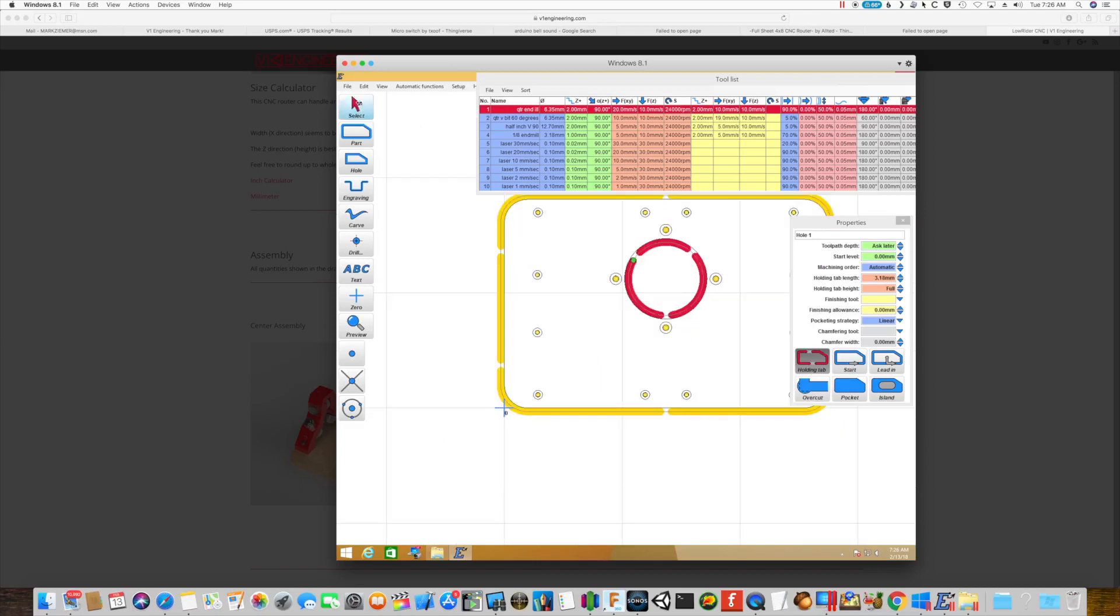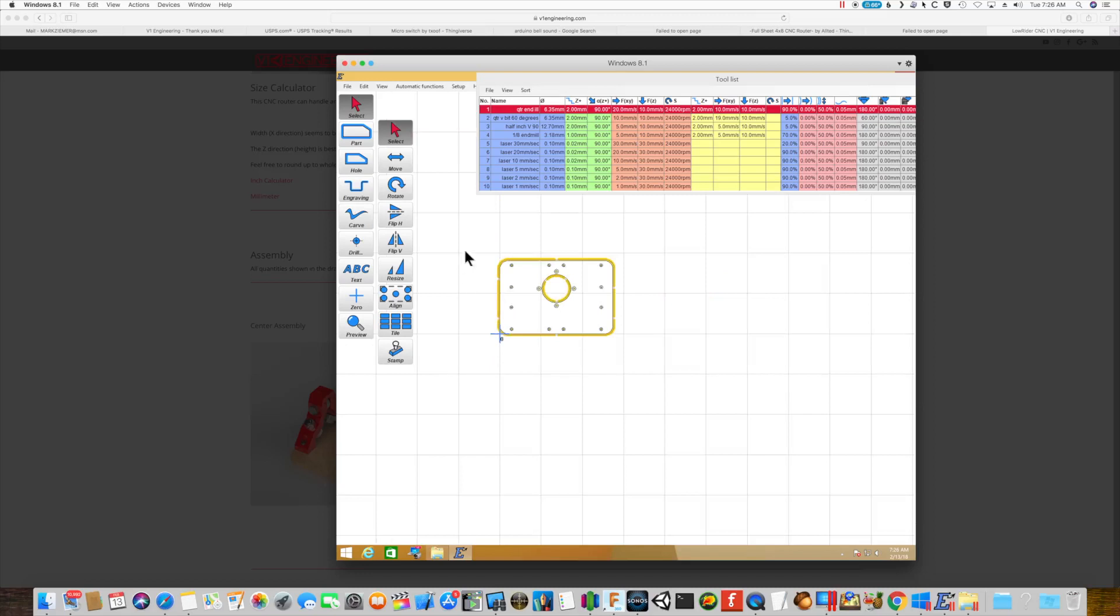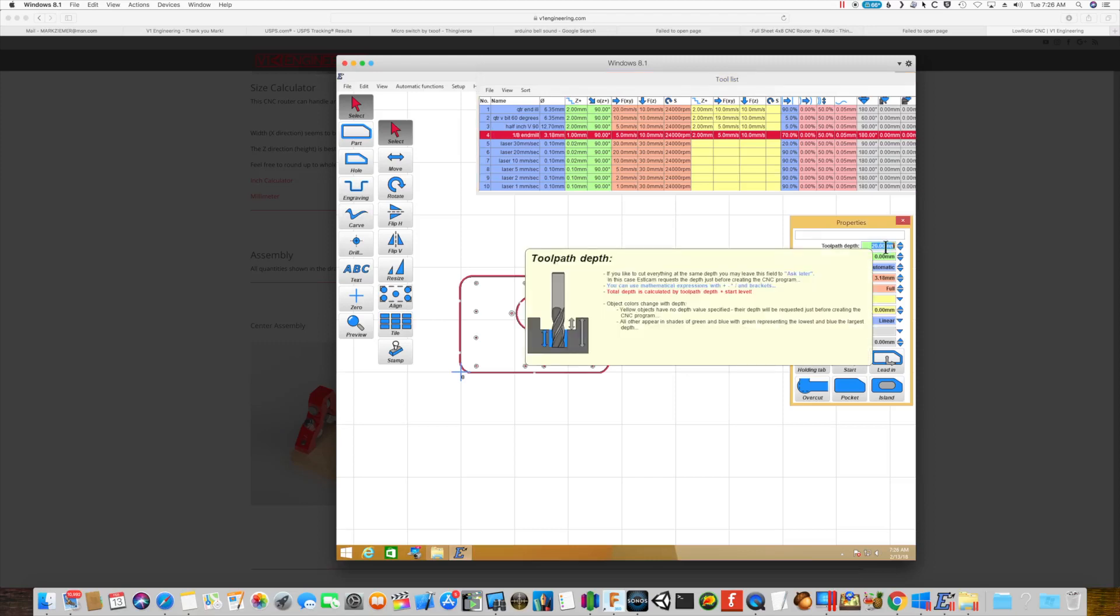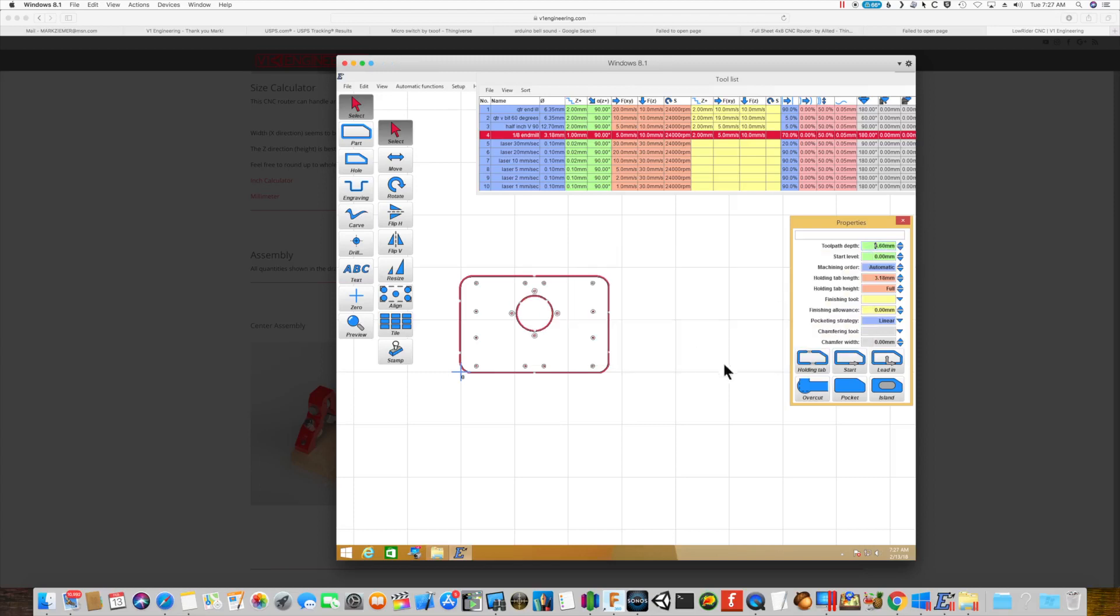And I've got the wrong bit selected. We're going to use an eighth inch bit here, so let's just go ahead and select everything. I'm going to change that to an eighth inch end mill, and we're going to set this just more than a quarter of an inch. This still goes through the material, so let's go down to 6.6 millimeters just to make sure we're well through the material.